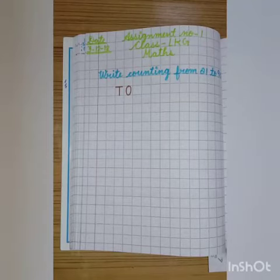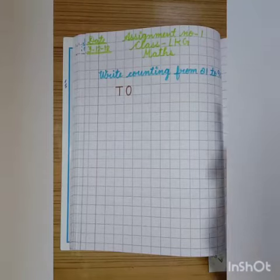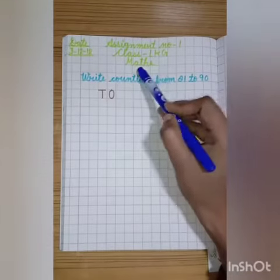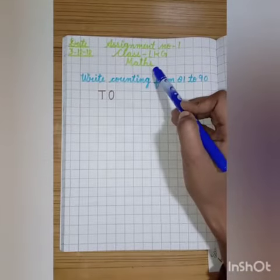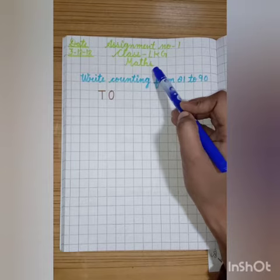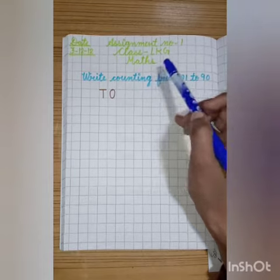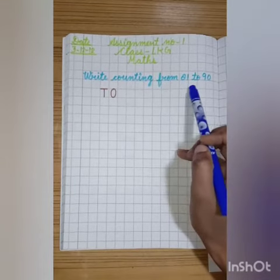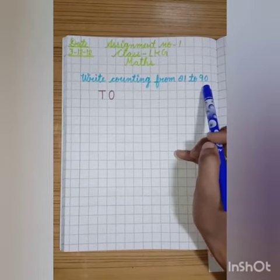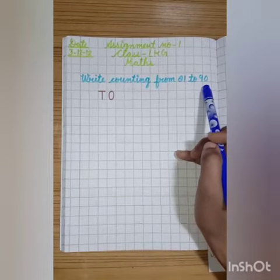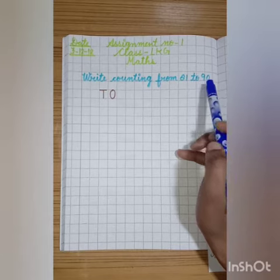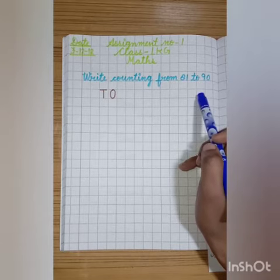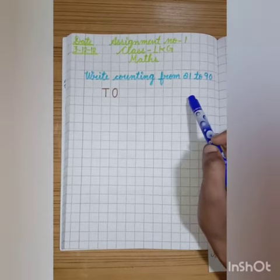Good morning children. Welcome back to maths class. Children, today we will learn counting from 81 to 90. Before doing this, we will do an activity. Okay?